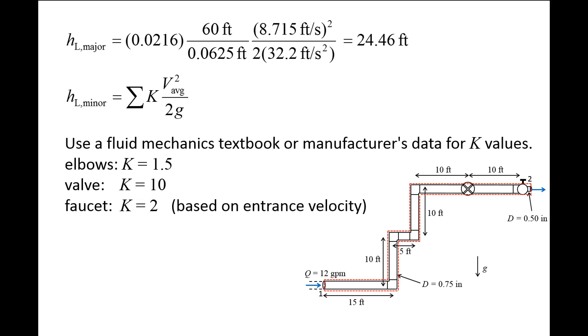Whenever a device's inlet and outlet cross-sectional area are different, it is necessary to determine whether the loss coefficient is based on the inlet speed or the outlet speed. The source where you obtain the loss coefficient should tell you this information. For this problem, we will assume that the loss coefficient for the faucet is based on the entrance speed to the faucet. This means we will use the average speed in the pipe, 8.715 feet per second, when calculating the minor loss associated with the faucet.